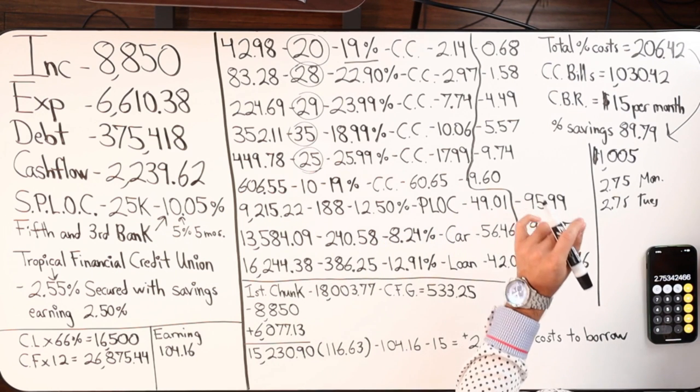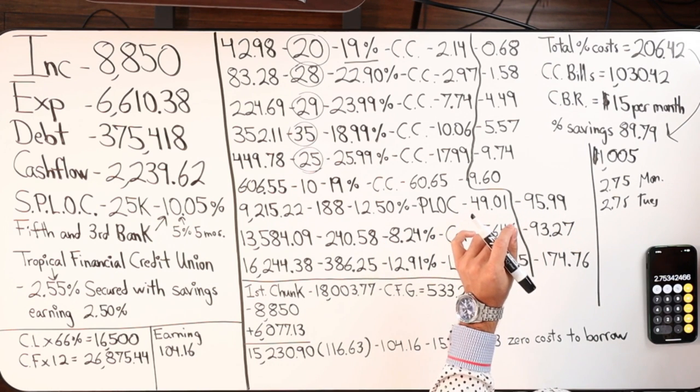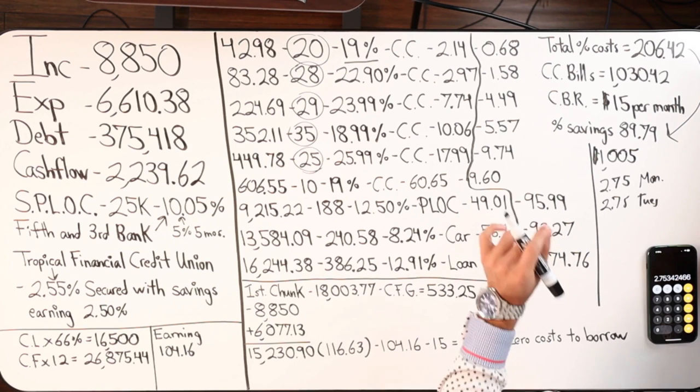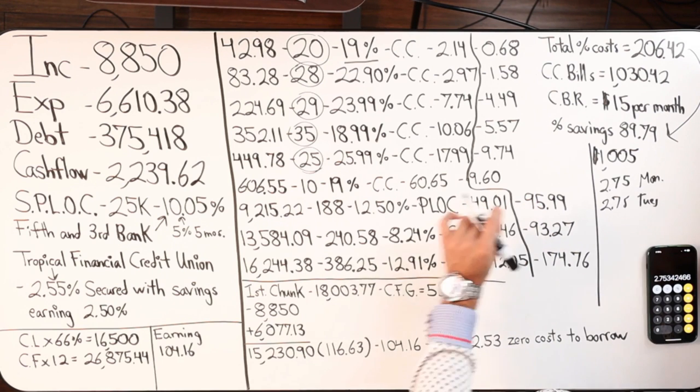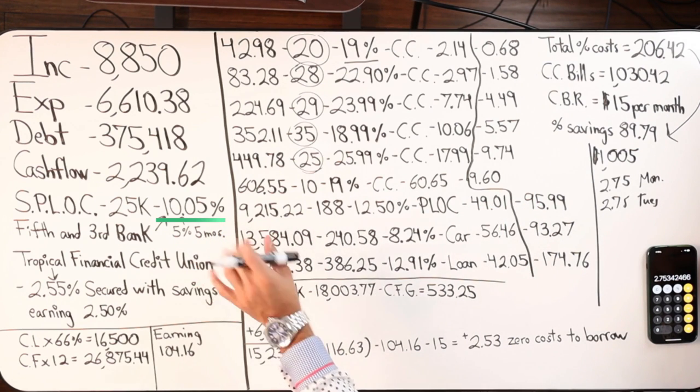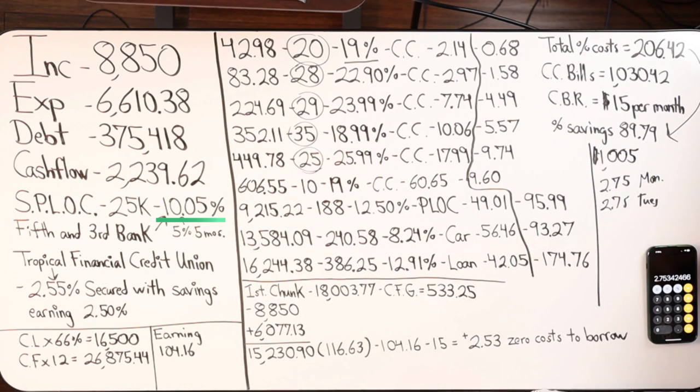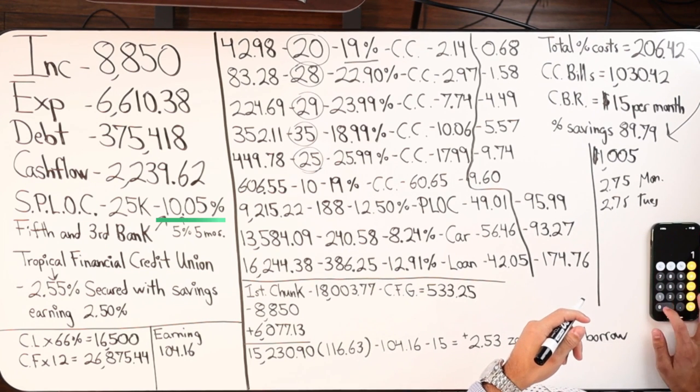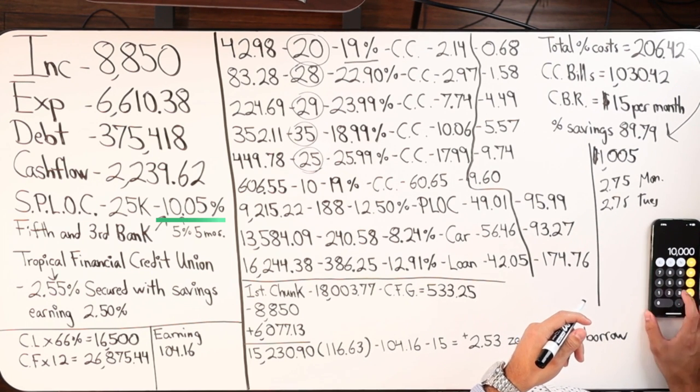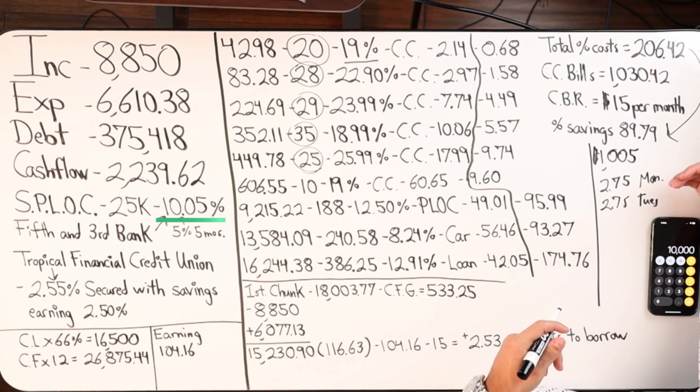If you do a cash advance on a credit card and you owe 10 grand, say it's the same rate, 10.05%, day one, you're going to owe $2.75. Then what happens is you're going to get charged that $2.75 at the end of Monday.